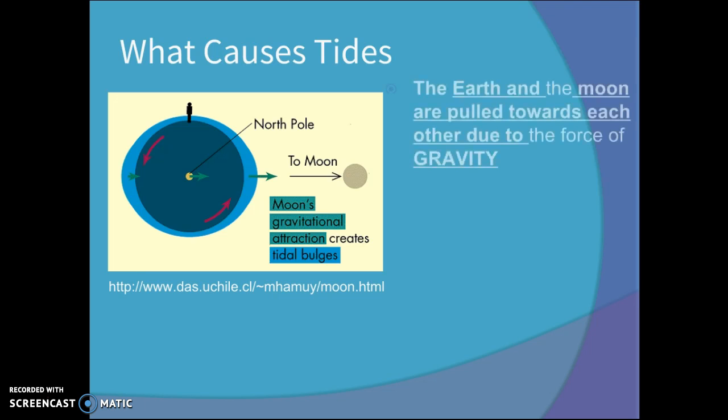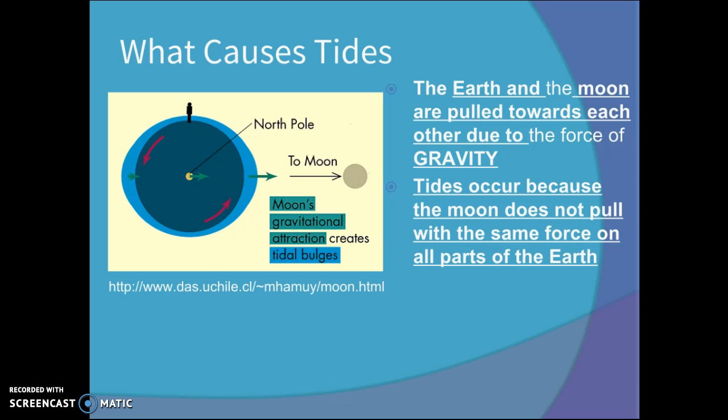What causes tides? The Earth and the Moon are pulled towards each other due to the force of gravity. We've already talked about this. And tides occur because the Moon does not pull with the same force on all parts of the Earth.